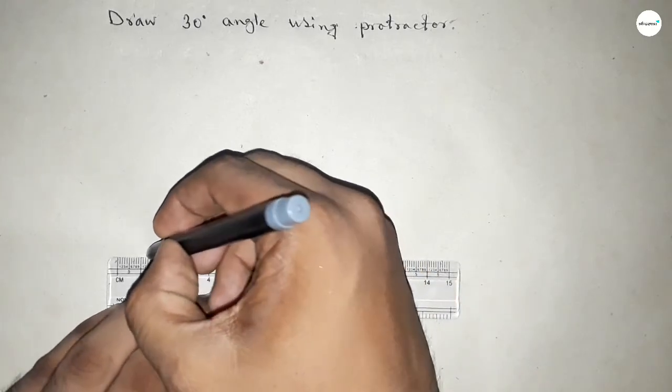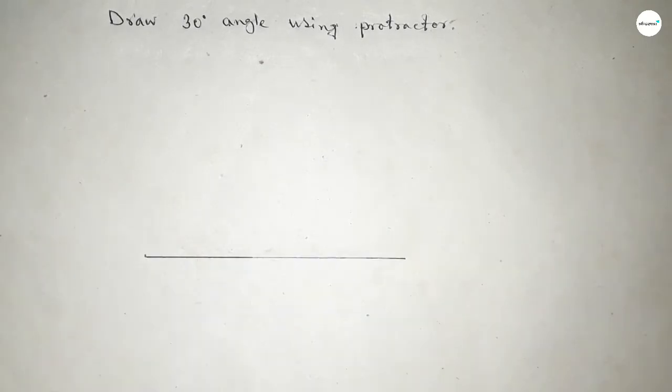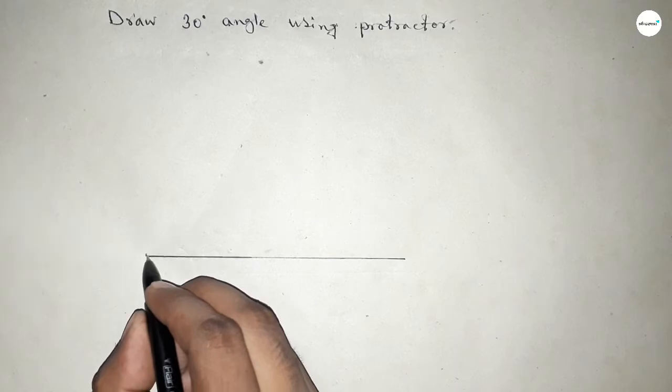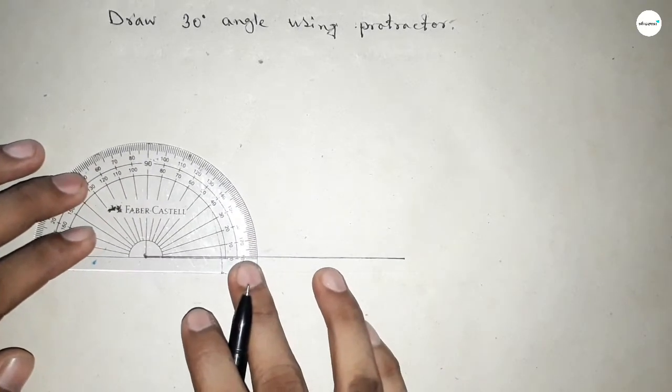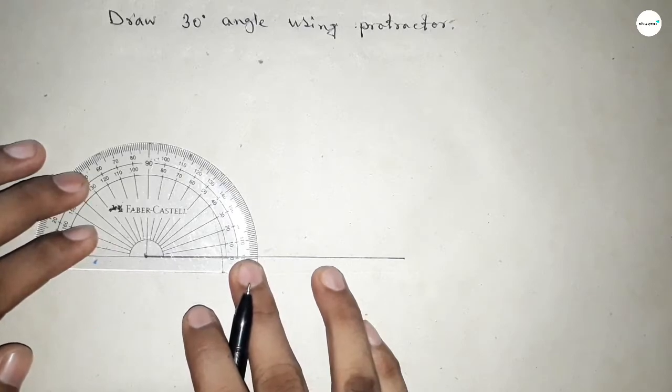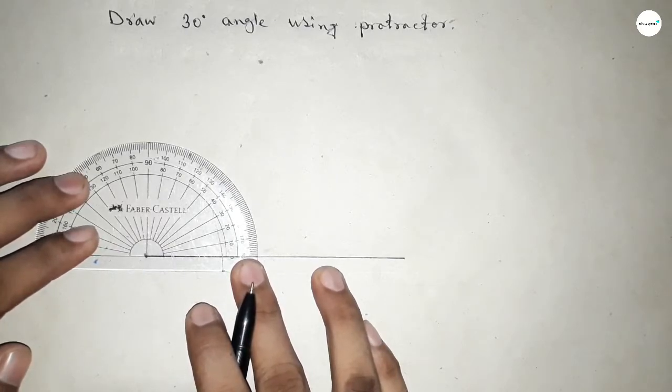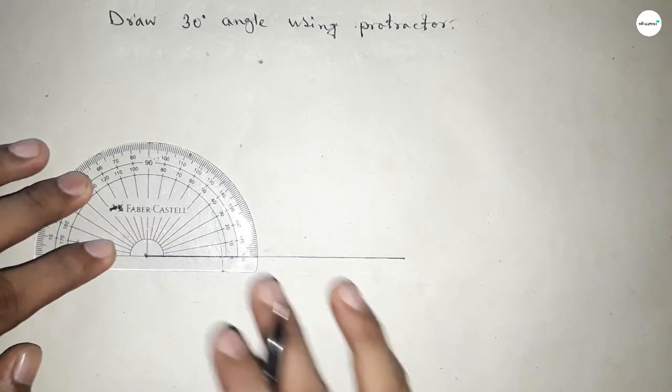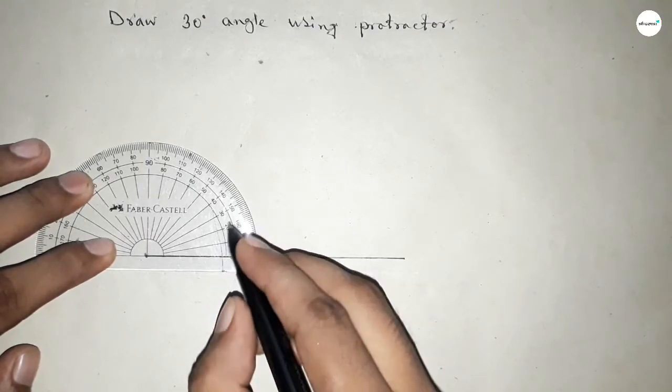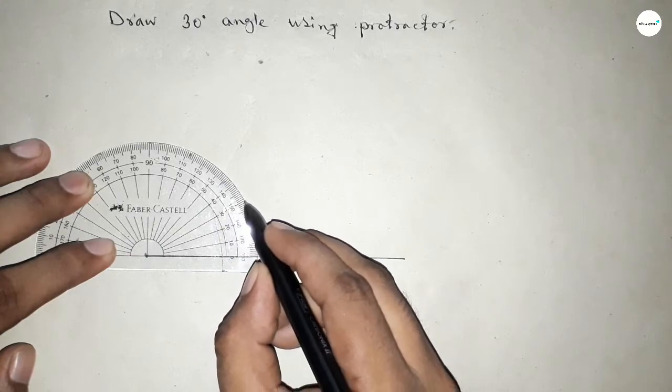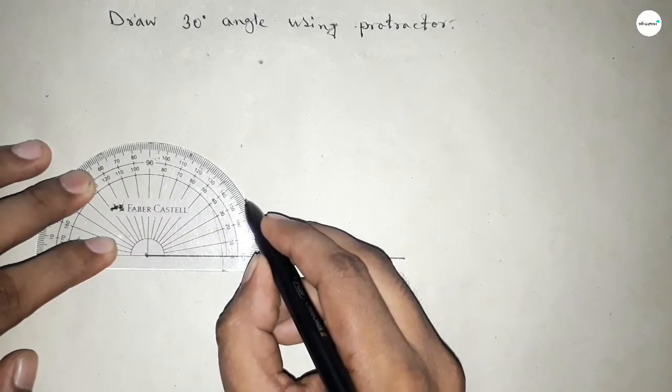Next, using the protractor, pointing this point here. Now putting the protractor perfectly on the line and now counting: this is 0, 10, 20, and this is 30. So this is 30 degree angle.